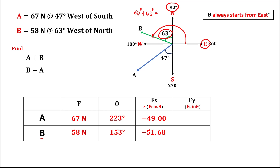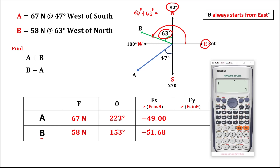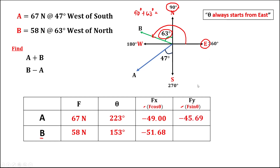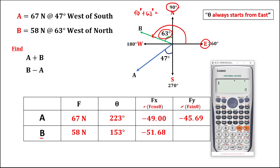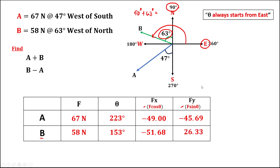To find the y-components for A and B using this formula: the magnitude is 67, then sine of 223 degrees, so the y-component for A is negative 45.69. Then for B, that's 58 times sine of 153 degrees, so that's 26.33.